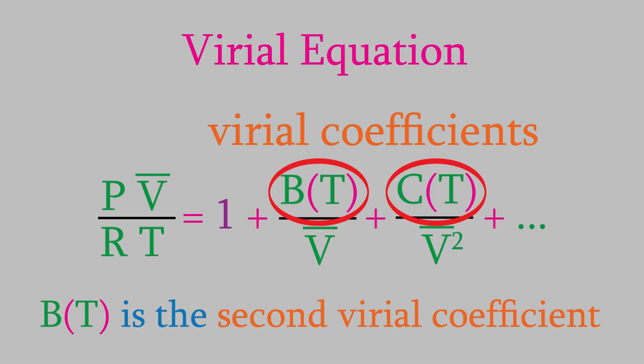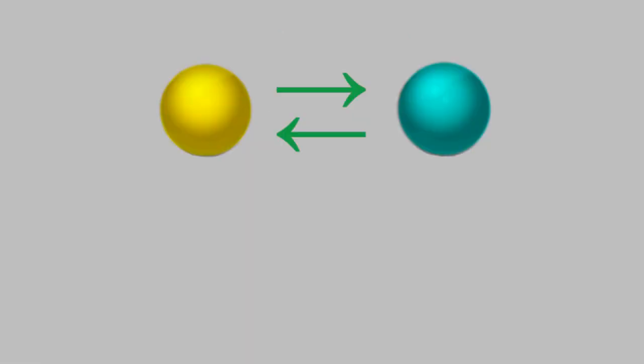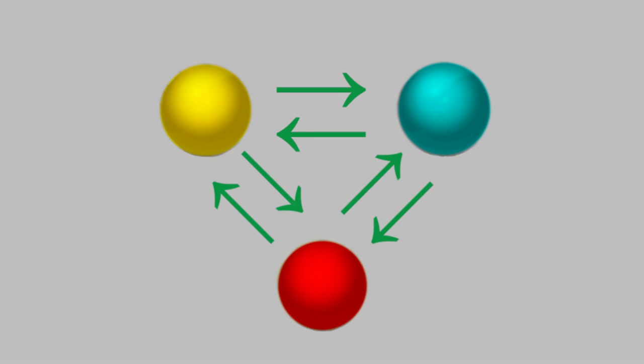So, what are those virial coefficients? What are the functions that they represent? It turns out that the answer is different for every gas. So, if we want to use the virial equation, we need to look them up. In general, the second virial coefficient describes the intermolecular forces between any two molecules of the gas. The third virial coefficient describes the interactions between any three molecules, and so on.